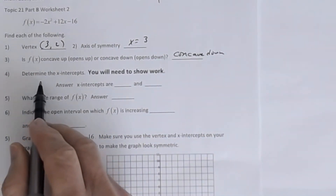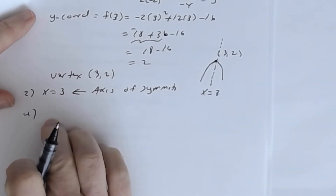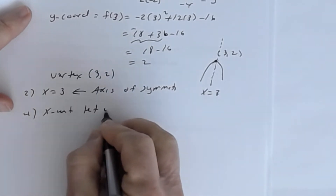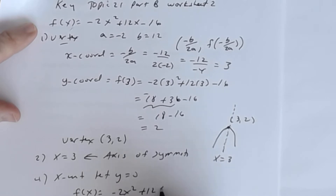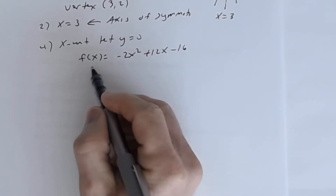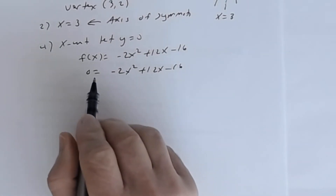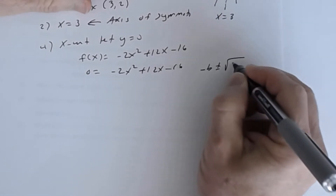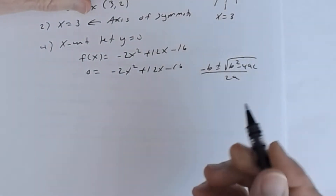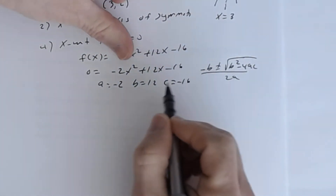Now let's determine the x-intercepts. Remember, to find the x-intercept you let y equal 0. Going back to our function f(x) = -2x² + 12x - 16, setting y = 0 gives 0 = -2x² + 12x - 16. We'll solve this using the quadratic formula: x = (-b ± √(b² - 4ac)) / 2a. Here a = -2, b = 12, and c = -16.